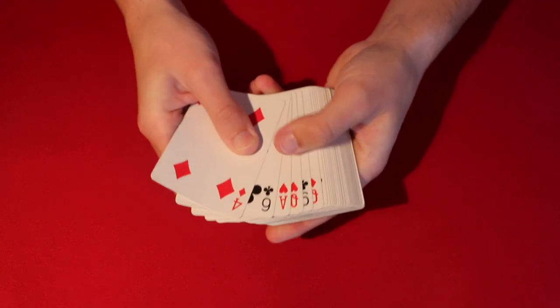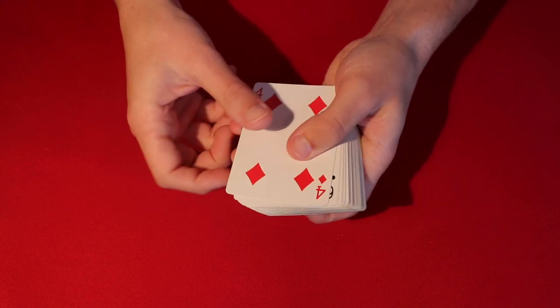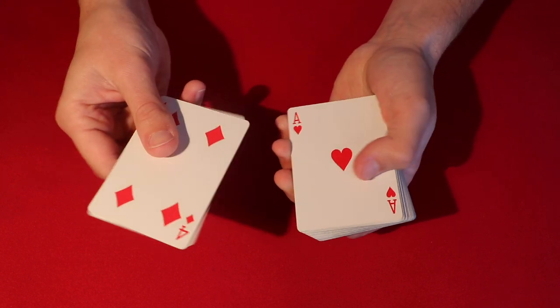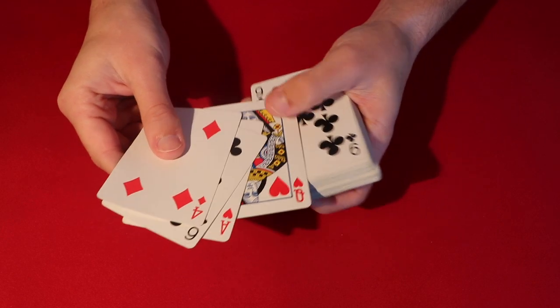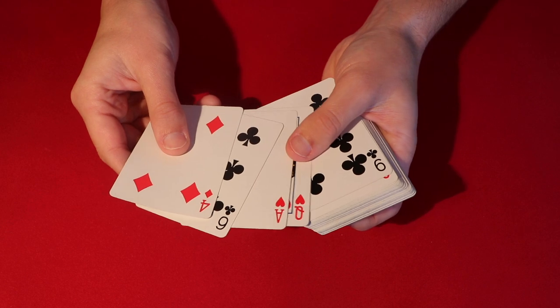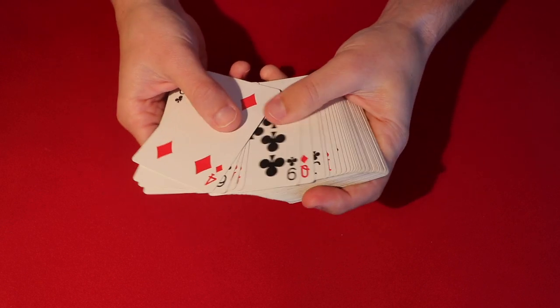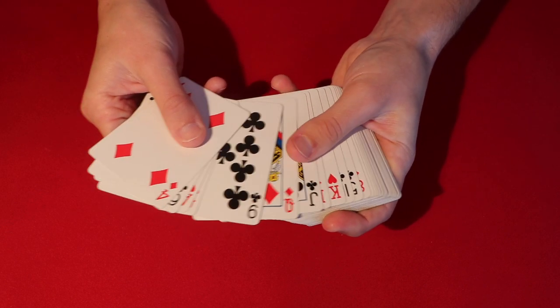So you angle the deck towards yourself. And then what you're going to do is count to the fourth card. So in this case, this is one, two, three. And then in the fourth spot, which is this queen of hearts, you know that, okay, the queen of hearts is in the fourth spot.